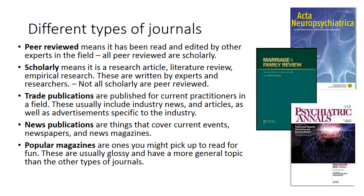Scholarly is a type of article published in scholarly and research journals, also called academic journals. A peer-reviewed article is a scholarly article, but not all scholarly articles are peer-reviewed. There are additional types of publications you may find as you search. Trade publications are published for current practitioners in the field and usually include industry news and advertisements. News publications cover current events. Popular magazines are something you might pick up and read just for fun.